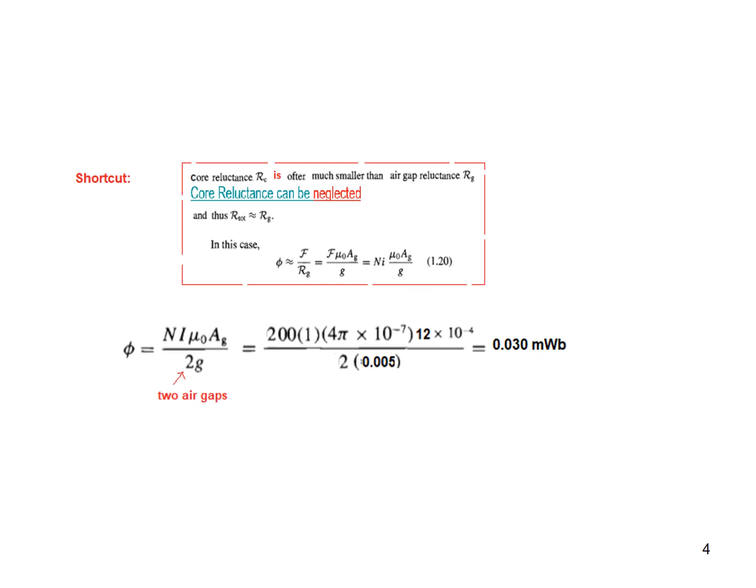So we're using this formula: N × I × μ₀ × Ag divided by 2g, because there are two air gaps in our case. Plugging in the values we get the answer 0.035 milliweber.